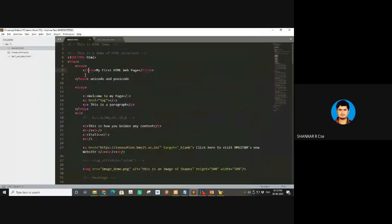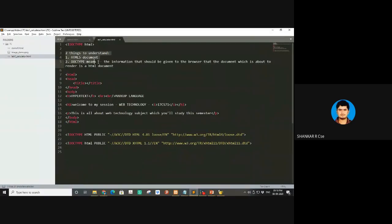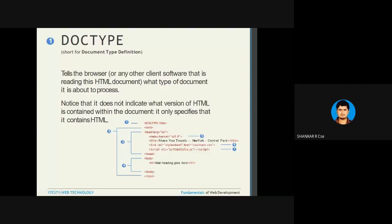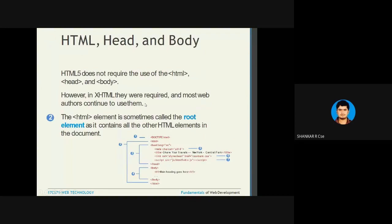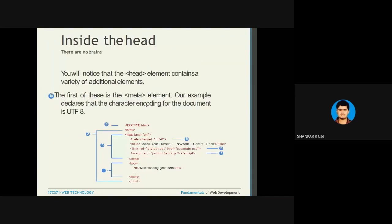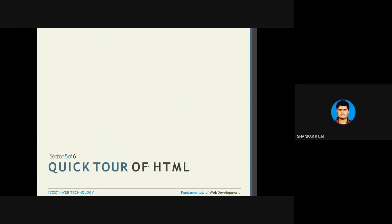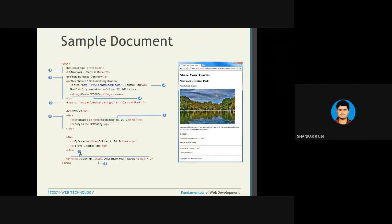DOCTYPE tells the browser what type of document it's about to process. The moment you write DOCTYPE html it's an HTML5 document. HTML, head, body — everything we've done in the last class. Inside the head goes functions, scripts, and CSS. Visible stuff goes in the body — I explained this with the car example. Section five of six: quick tour of HTML — various tags H1, H2, paragraph, strong, div.